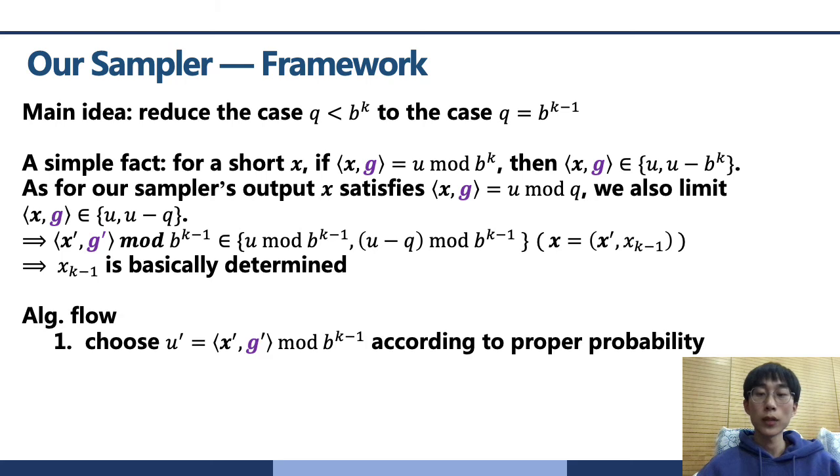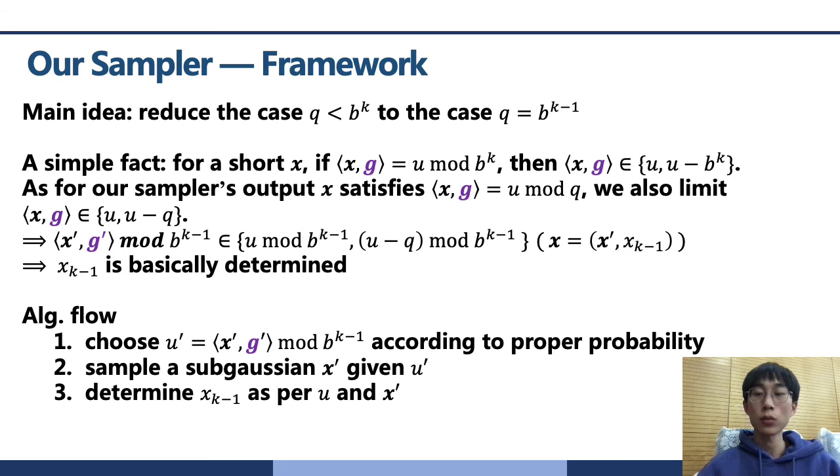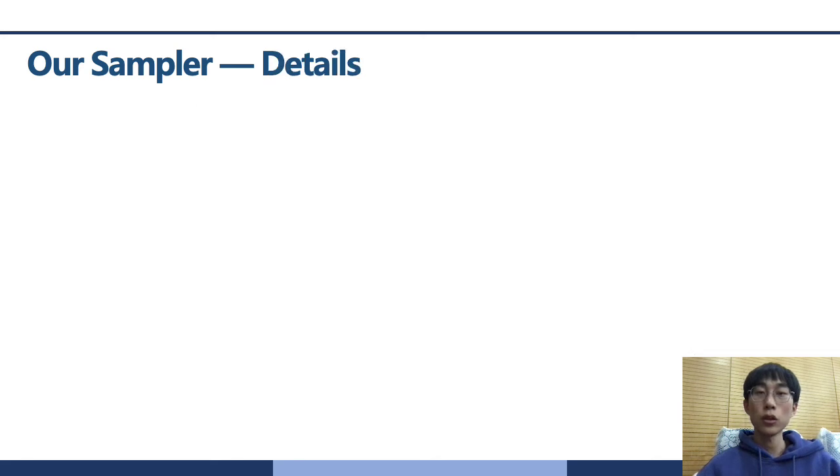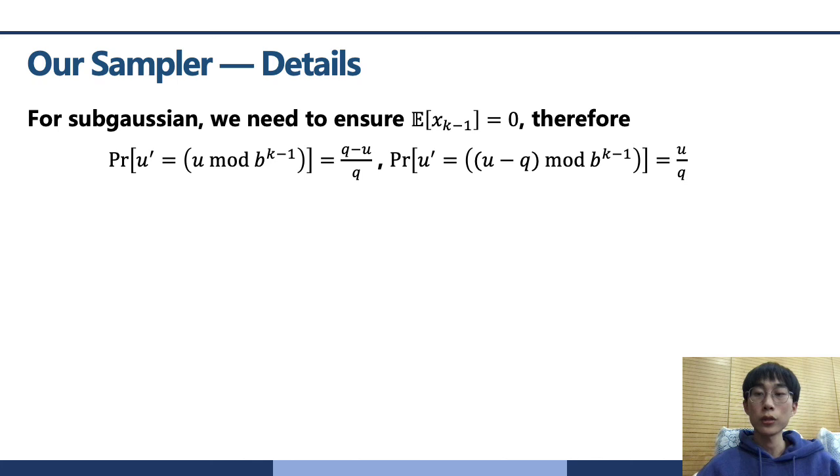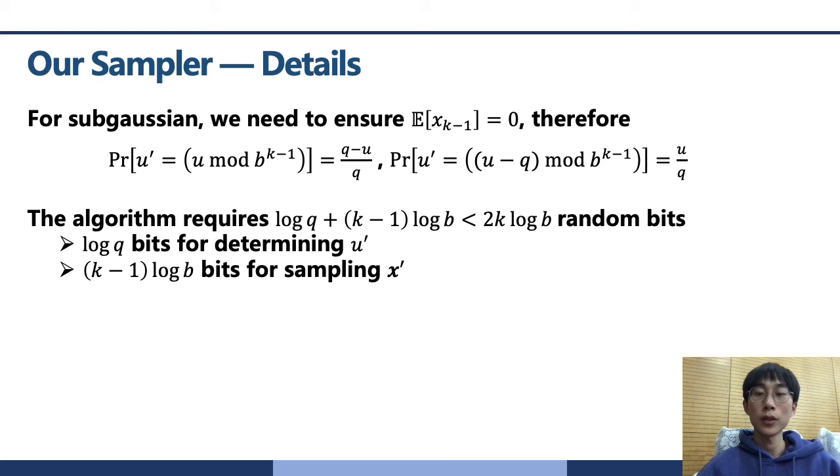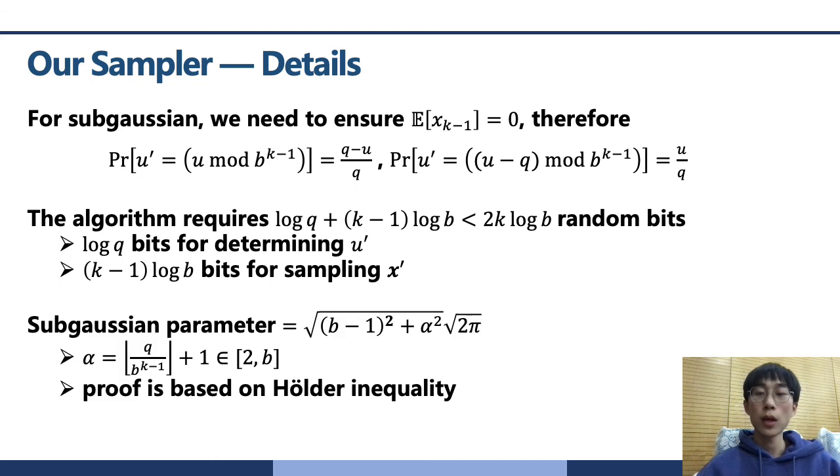So our sampler proceeds in these three steps. First, we choose u' according to the proper probability. Then, we sample a sub-Gaussian x' with the sampler for q equals b^{k-1} giving u'. Finally, we determined the last coefficient x_{k-1} as per u and x'. Let's talk some details about our sampler. These are the probabilities of selecting branches in the first step. Our algorithm requires less than 2k log B random bits. It consists of log q random bits for determining branch in step 1 and (k-1) log B random bits for sampling x'. This is a sub-Gaussian parameter achieved by our new sampler. And this can be proved by the Hölder inequality.